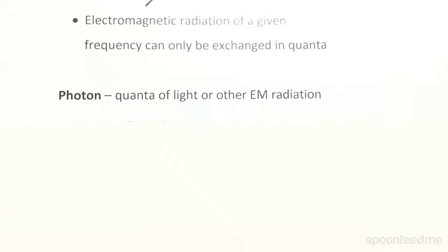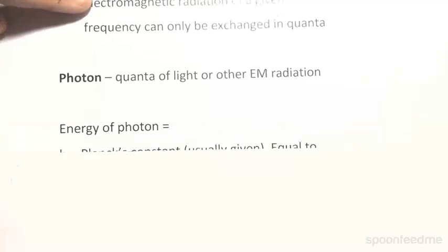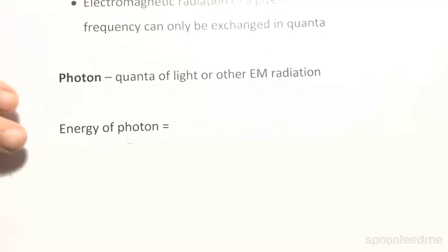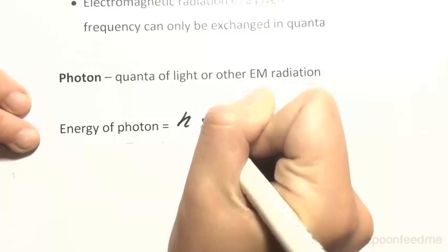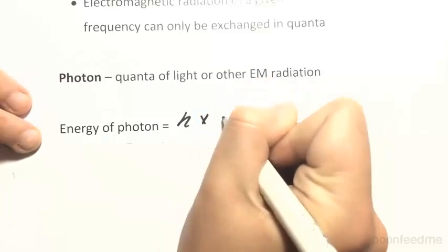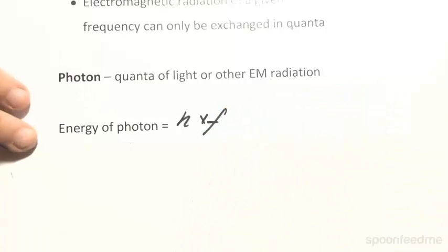A photon is a particle that represents a quantum of light or other electromagnetic radiation. We can actually calculate the energy of a photon using a particular formula. The energy of a photon is equal to h, which is a constant known as Planck's constant, multiplied by f, the frequency of the electromagnetic radiation.